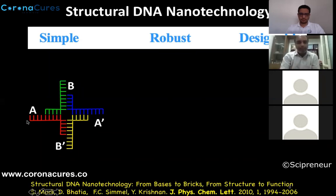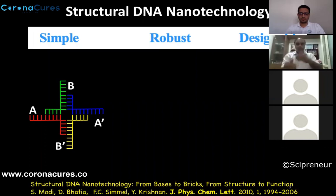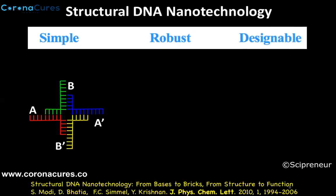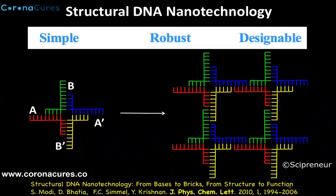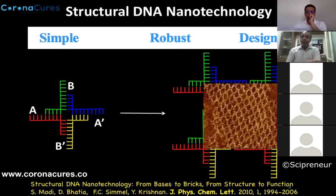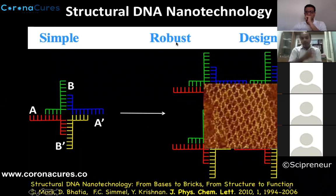By designing single-stranded sequences so that strand A is complementary to A-prime and B to B-prime, when you mix these four DNA strands in a test tube, heat them in a PCR machine to denature everything, and slowly cool from 95 degrees to 4 degrees, they start to self-assemble. The process doesn't stop at a single motif — they continue assembling into 2D sheets, visible under atomic force microscopes or electron microscopes. This is the principle of DNA nanotechnology: simple, robust, and designable — you can easily synthesize different DNA strands and make devices in quantitative yields, in 1D, 2D, or 3D.